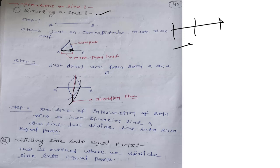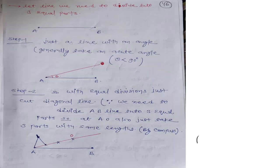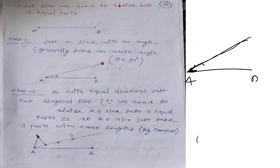The second operation is dividing a line into more than two equal parts — like dividing into three equal parts. Make line A and B, then make an angle with a diagonal line, keeping the angle less than 90 degrees — like 45, 60 or 75, but not equal to 90. Make three equal parts on this diagonal line: one, two, and three. Then draw lines through those points parallel back to the original line, which cuts the diagonal into three equal parts.